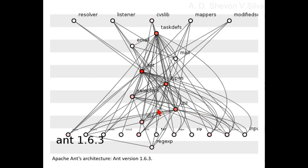Here you can see task devs and types, selectors, util, resolver, and listener. Mappers, modified regexp, tar, etc.